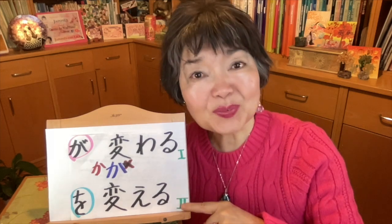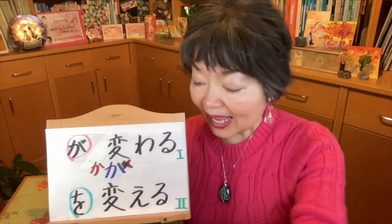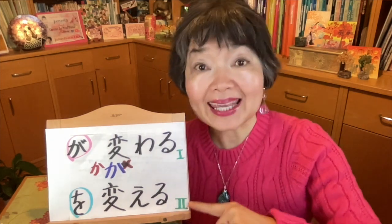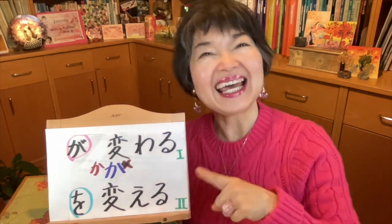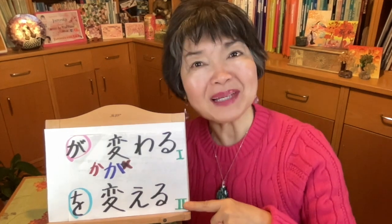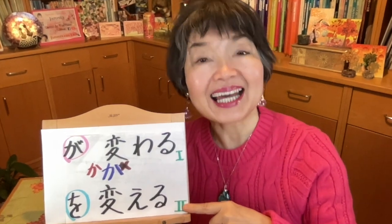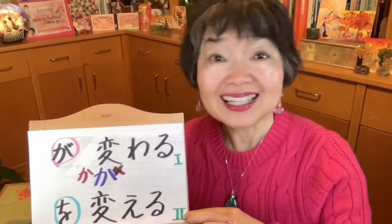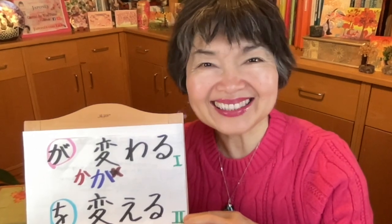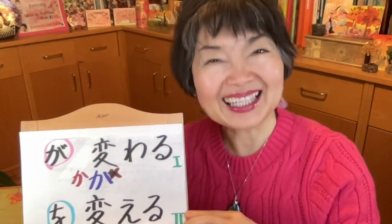Now the transitive one: kaeru. 'A' sound — this is group two. Kaemasu, kaete, kaeta, kaenai, kaeru.